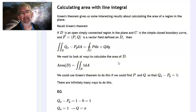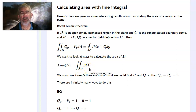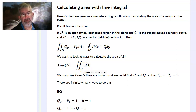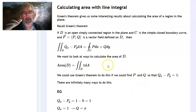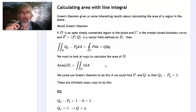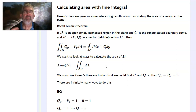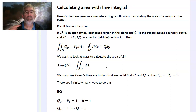I want to calculate the area. In general, the area of a region is the double integral of 1 dA. To use Green's theorem, I have to turn this into ∂Q/∂x − ∂P/∂y. So I need to find P and Q such that ∂Q/∂x − ∂P/∂y = 1. Think about the fundamental theorem of calculus: you want to integrate a function, find an antiderivative. Well, there are infinitely many antiderivatives you could use.